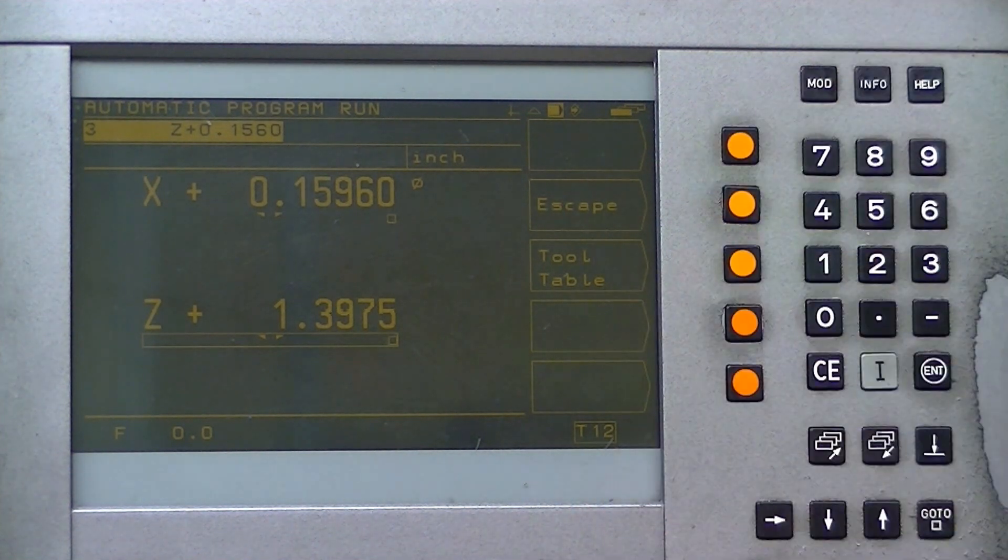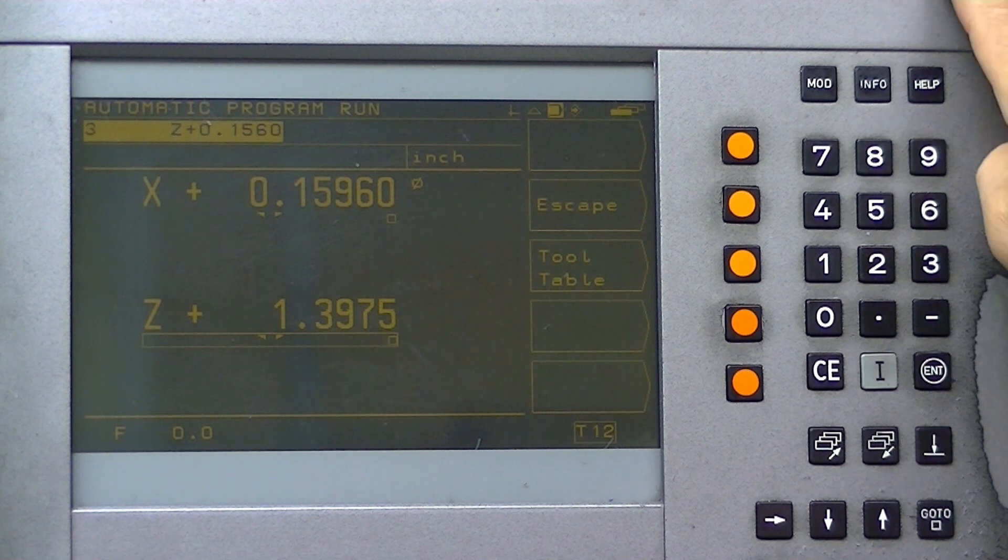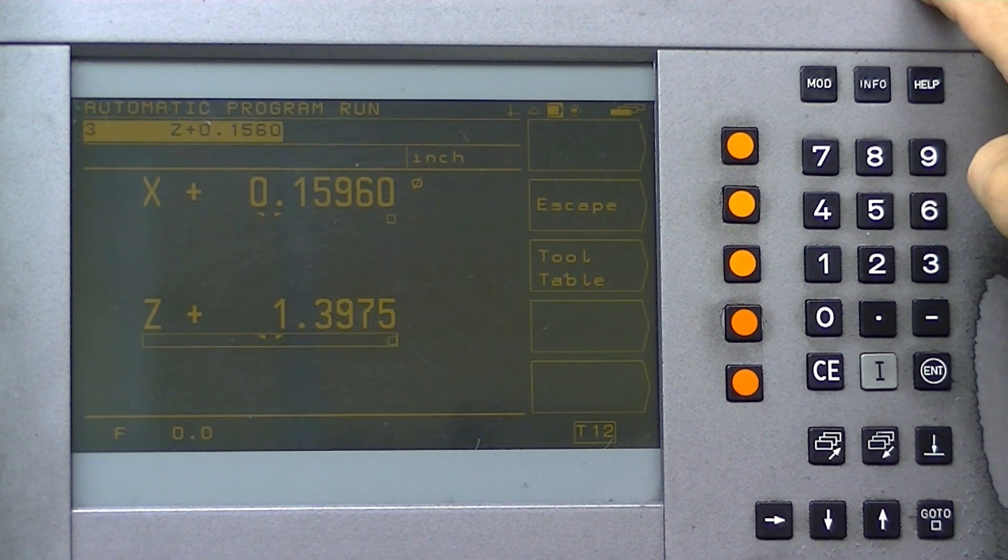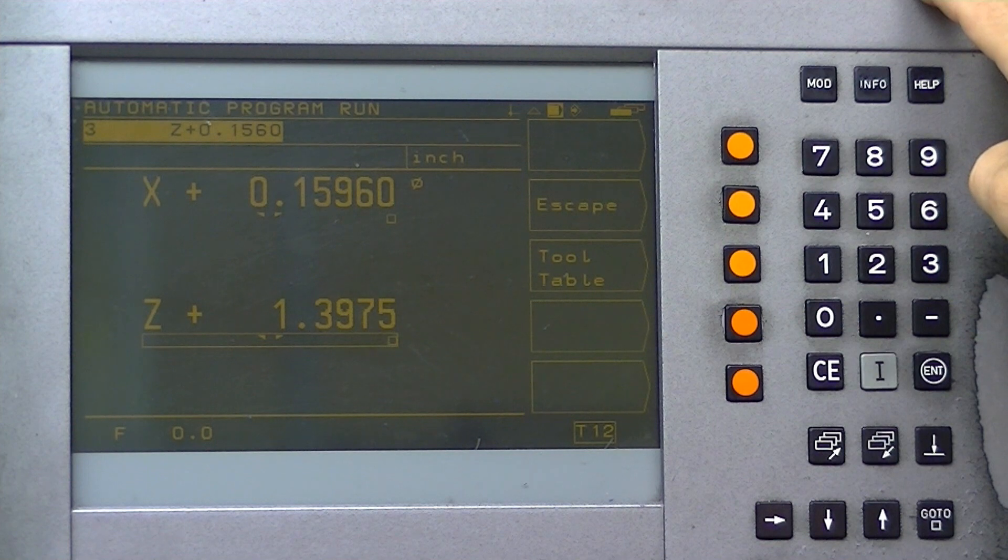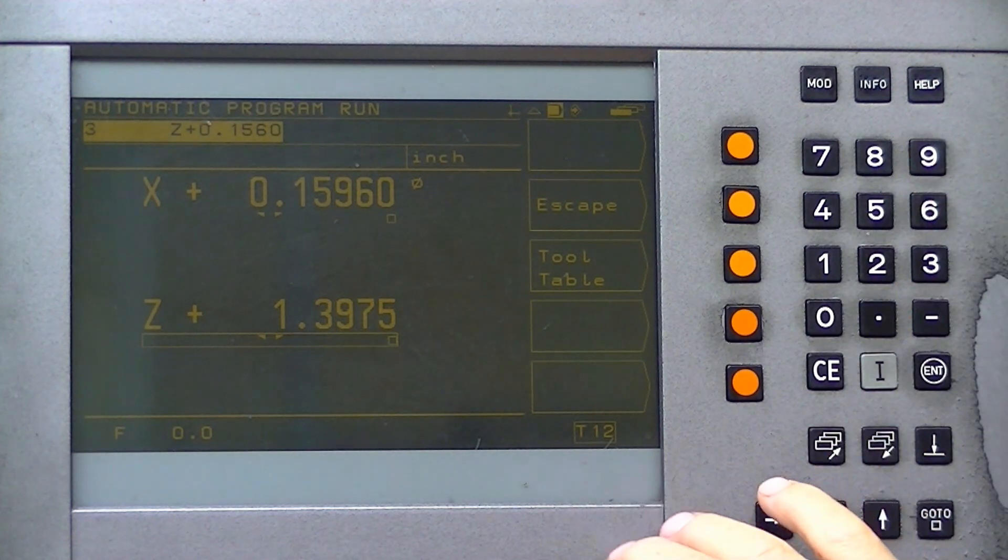This is a digital readout that uses analog scales, meaning that the signal from the scale is two sine waves in quadrature, meaning they're phased 90 degrees to each other. The interpretation of those sine waves is done internally in this, and the subdivision of that is adjustable in here.